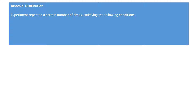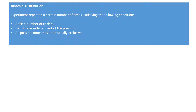The binomial distribution is used when we're dealing with an experiment which is repeated a certain number of times and satisfies the following conditions: there's a fixed number of trials, which we call n; each trial is independent of the previous; and each of the possible outcomes are mutually exclusive. For instance, if the experiment consisted of flipping a coin three times, outcomes like tails-tails-heads and heads-heads-tails are mutually exclusive because it would be impossible to get both simultaneously.